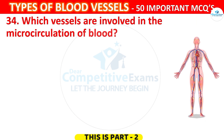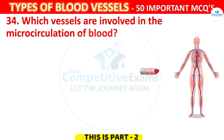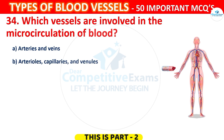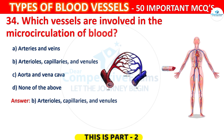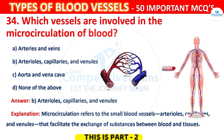Question 34. Which vessels are involved in the microcirculation of blood? The options are: Arteries and veins; Arterioles, Capillaries and Venules; Aorta and Vena Cava; or None of the above. The correct answer is B — Arterioles, Capillaries and Venules. Microcirculation refers to these small blood vessels that facilitate the exchange of substances between blood and tissues.